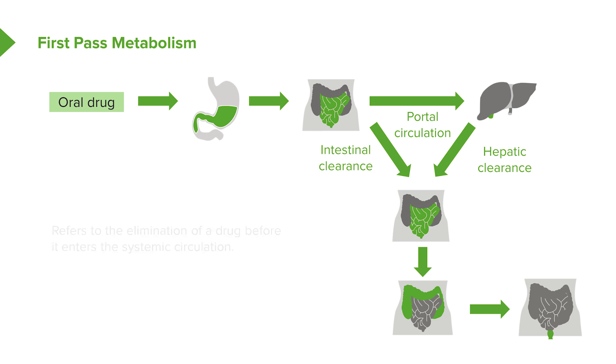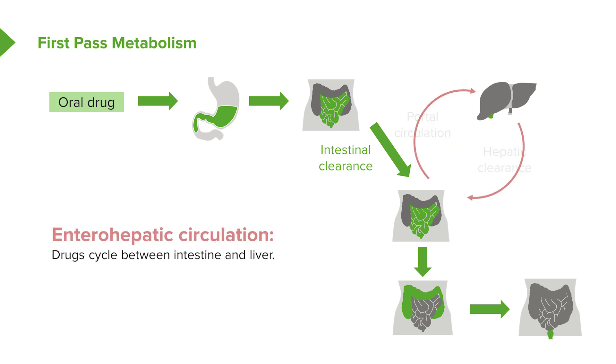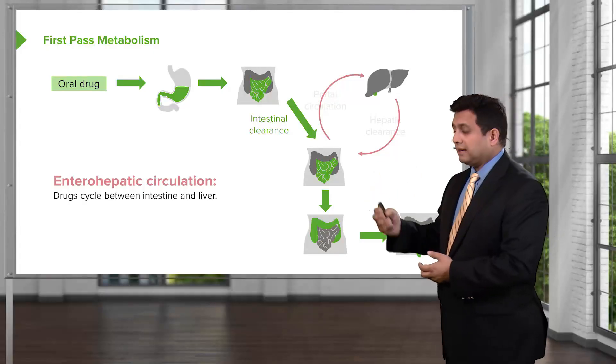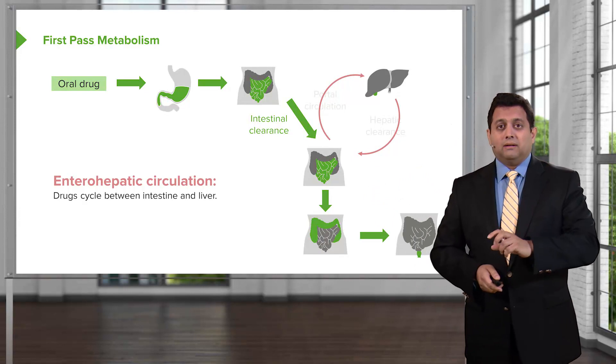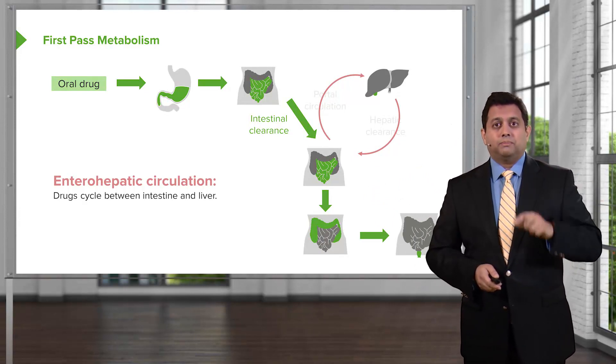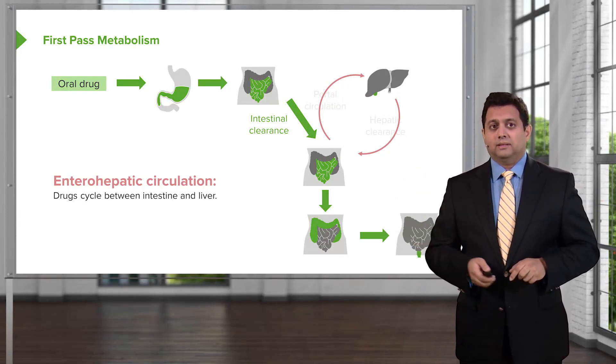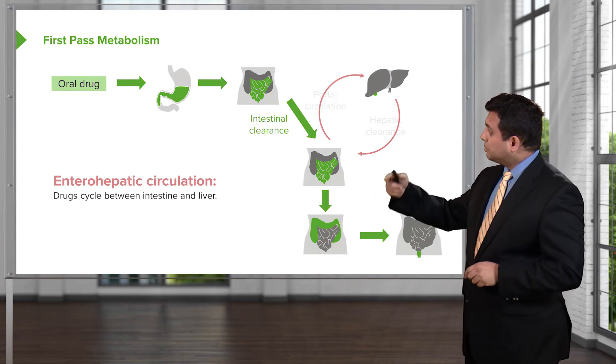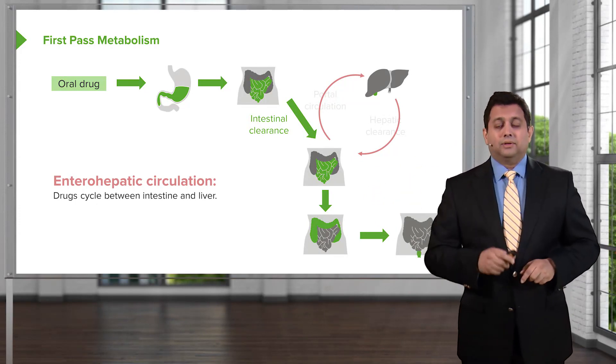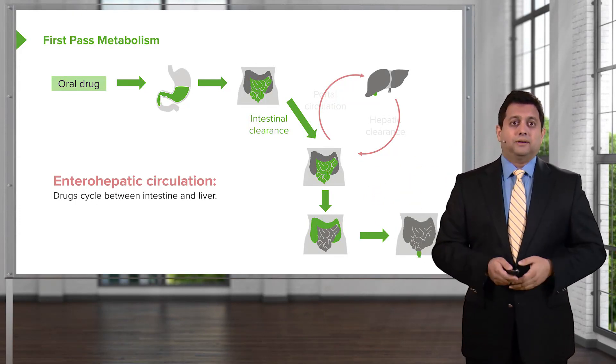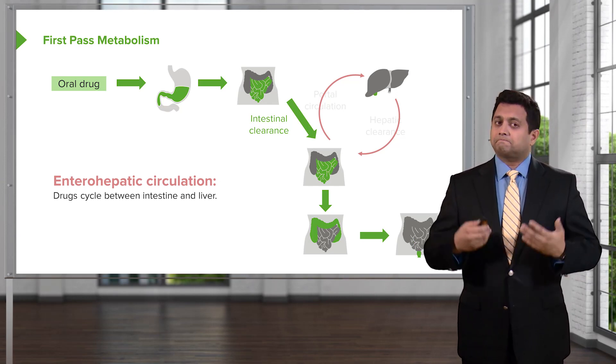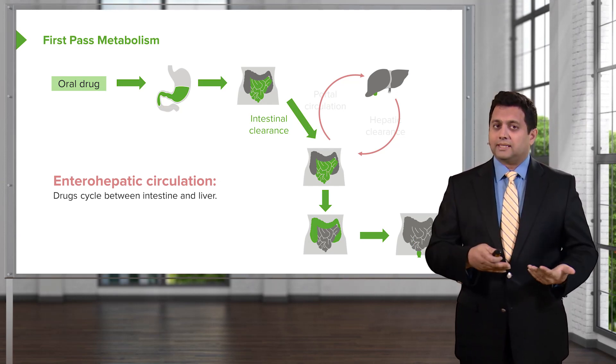Now, enterohepatic circulation is a different concept because instead of having the drug being simply eliminated through the bowel from the bile, it goes into the bowel and when it's in the bowel, it gets reabsorbed through the portal circulation and goes back to the liver. So that circular motion of the drug between liver and small bowel refers to enterohepatic circulation. Drugs cycle between intestine and liver.